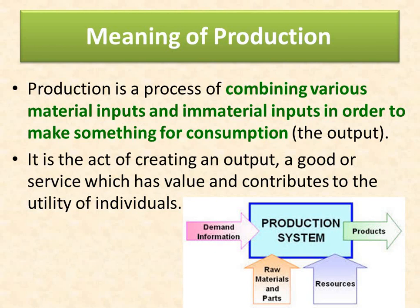The output is something converted for consumption — it is the act of creating an output, a good or a service, which has value and contributes to the utility of the individual. Using demand information along with raw materials and resources — such as human people or land — the production system produces the final products, which could be goods or services usable by a consumer.